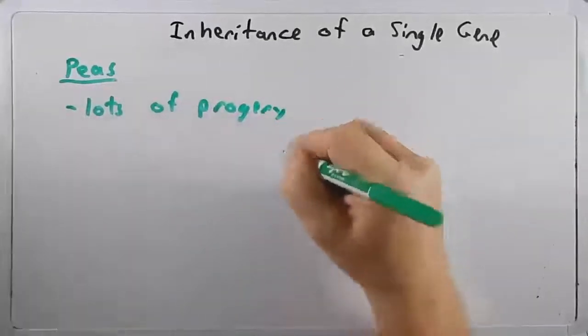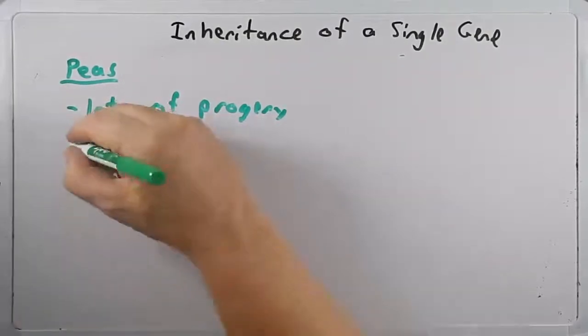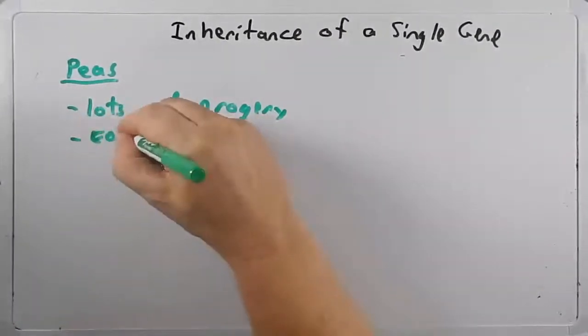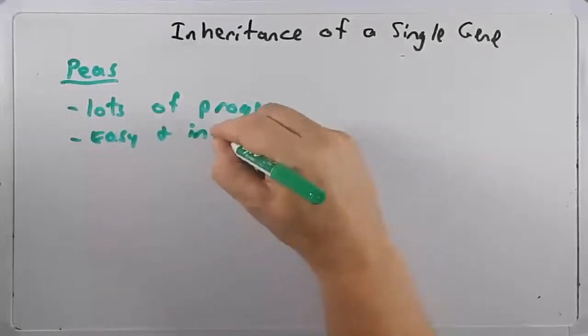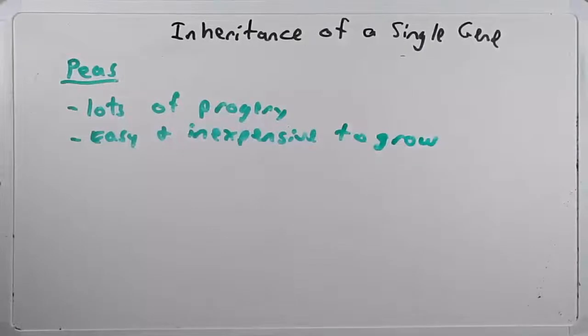Now today, we might pick a different organism, say fruit flies, yeast, various kinds of worms, that also give us lots of progenies. But the peas were a convenient thing for him to study. In general, they were easy and inexpensive to grow. And I suspect when they were done with his studies, they ate the peas. So it served two purposes.